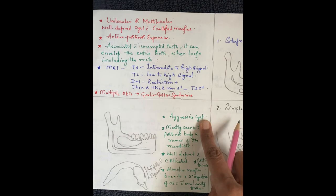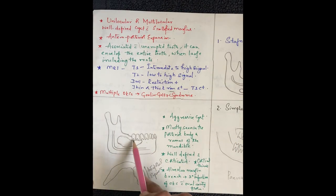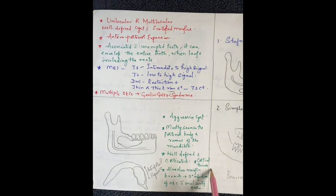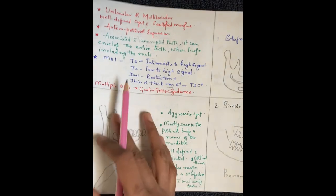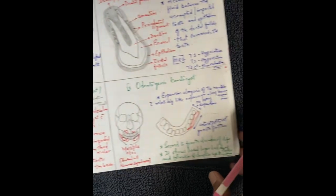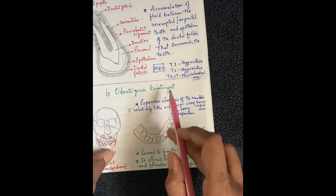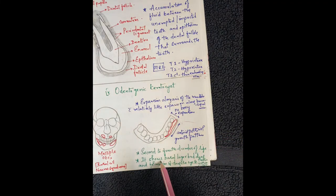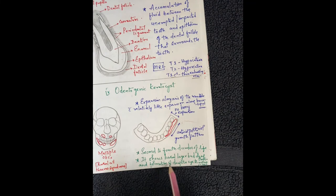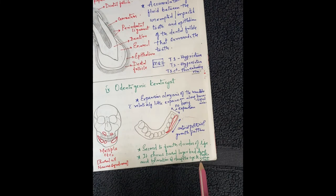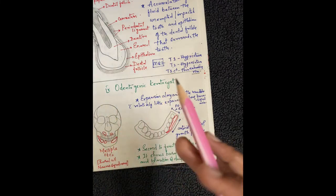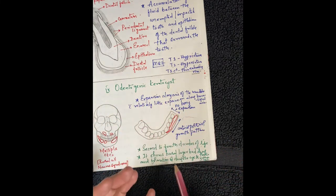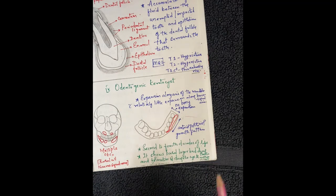The odontogenic keratocyst is an aggressive cyst, mostly seen in the posterior body and ramus of the mandible. It is well-defined and corticated, but there may be cortical thinning with mucosal breach and secondary infection with oral cavity flora. There are high chances of recurrence after surgical removal because it shows basal layer budding and formation of daughter cysts outside the primary cyst. Therefore, wide excision is required.